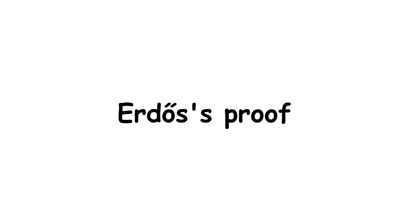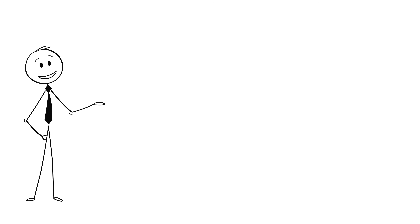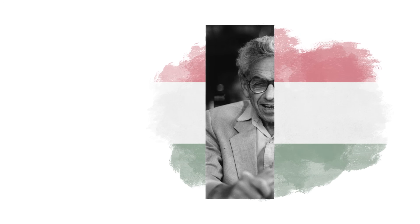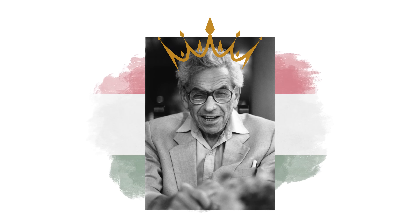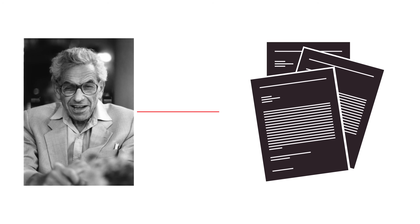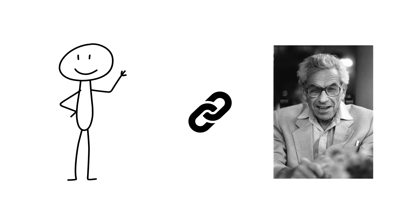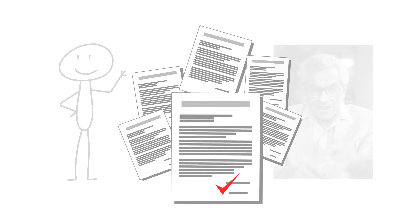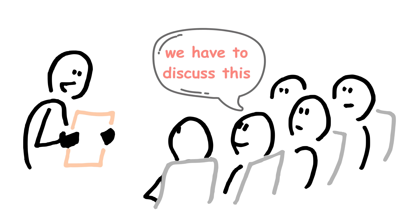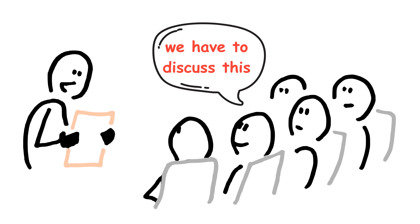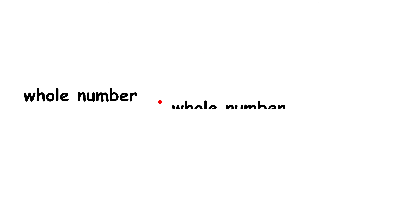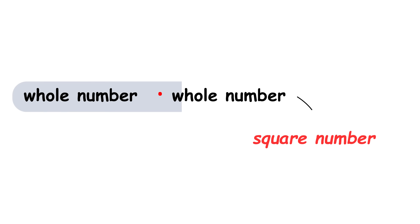Erdős' proof. This final proof is taken from Hungarian mathematician Paul Erdős. He's rather famous in the world of math. He collaborated on so many research papers that the concept of an Erdős number was invented, categorizing how closely linked a given person is to Erdős by paper collaborations.